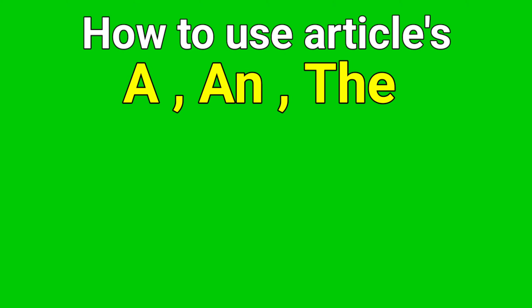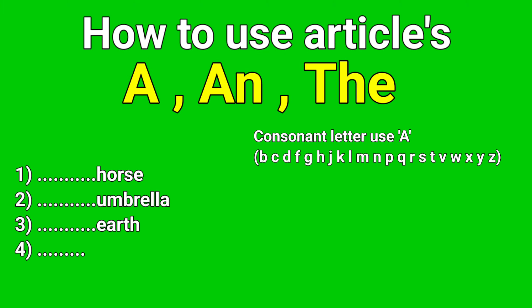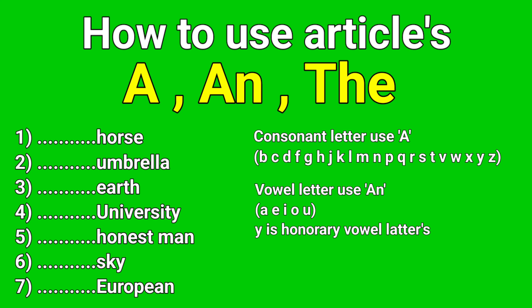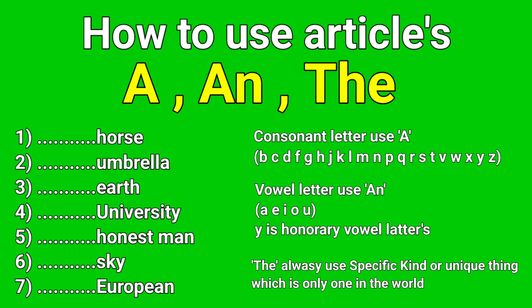How to use articles 'a' and 'the.' Always use 'a' with a consonant sound or consonant letter, and always use 'an' with a vowel sound or vowel letter. Note: sometimes we say 'a university' because the sound is consonant. 'The' is always used for a specific kind, or a unique thing, like sky, earth, and many more unique things. Let's start our topics.